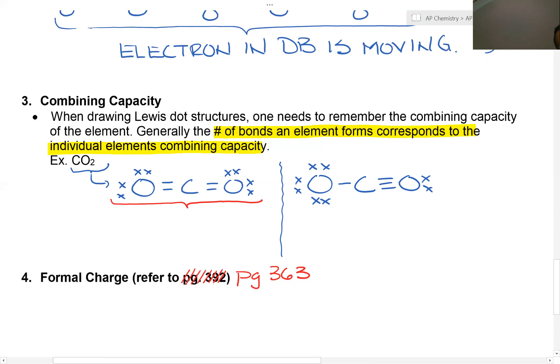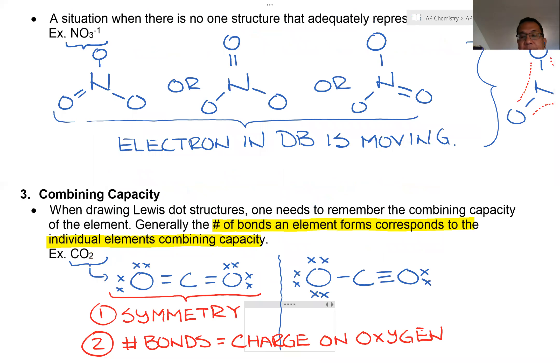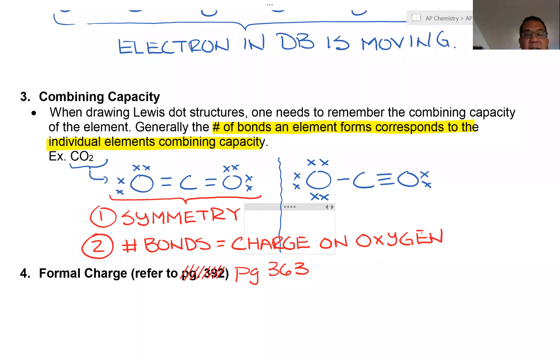Two reasons. Number one is there is symmetry. It's nicely balanced. You want to have symmetry. Number two, notice the number of bonds on oxygen is equal to the charge on oxygen. Oxygen has a charge of minus two. So what it would prefer is to have a maximum number of bonds of two. Here in this case, there is no symmetry. And also this oxygen here on the right has three bonds. Now, in Chem 11, this is where I stop.